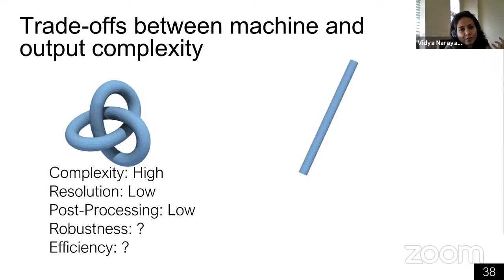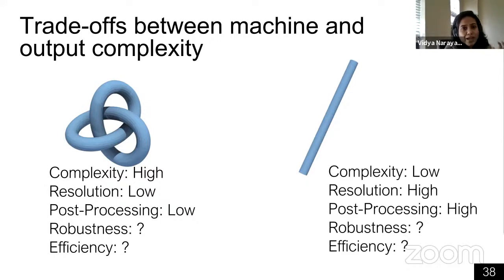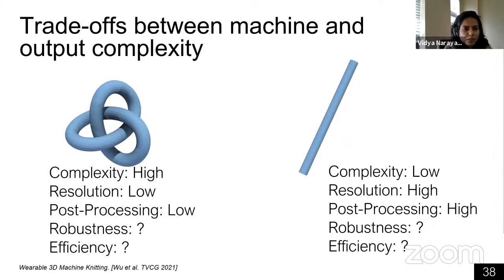Computational design tools have an exciting space of trade-offs to explore. One example is the wearable 3D machine knitting work from Wu and colleagues, where they work with simpler patches that can be stitched later to create complex shapes. To recap, we went over what knitting machines can make in a very bottom-up fashion: how are these machines made — with needles; how are these needles arranged — in various different ways; and that in turn gives you different design spaces. Now let's think about how we program these machines and how we can represent these programs for 3D structures.